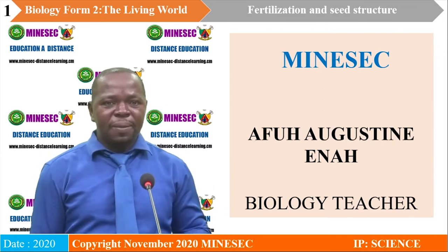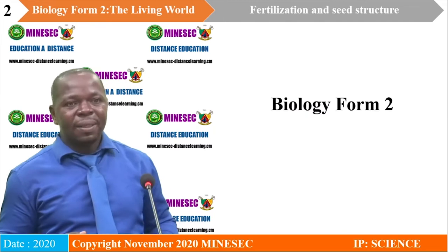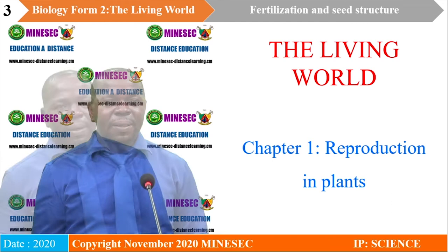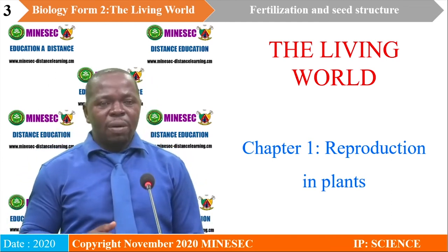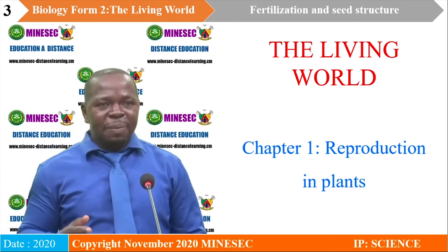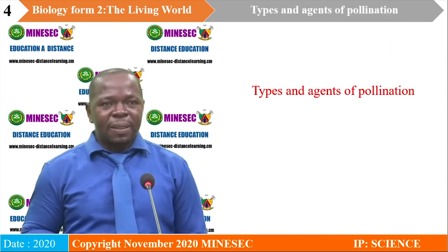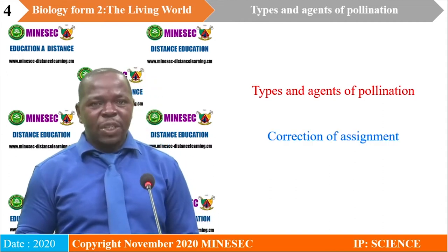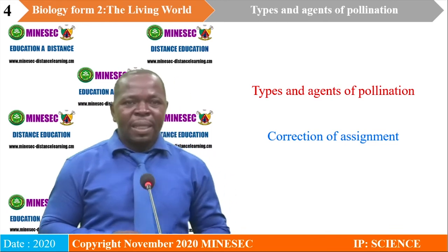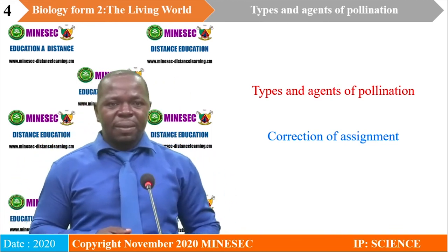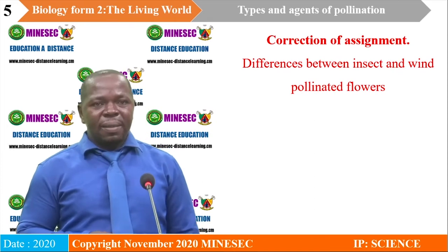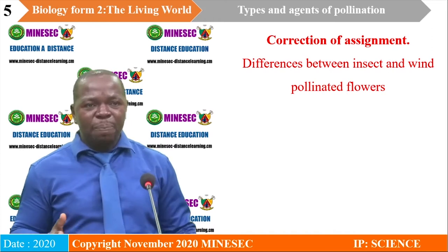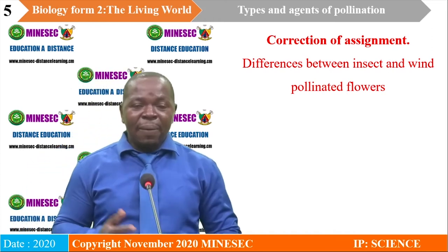I am Afu-Augustin Ena, your biology teacher. I am equally your facilitator for Form 2 Biology. We are on the module The Living World. The chapter is Reproduction in Plants. Our last lesson was on Types and Agents of Pollination. We are going to correct the assignment on the differences between insect and wind-pollinated flowers.